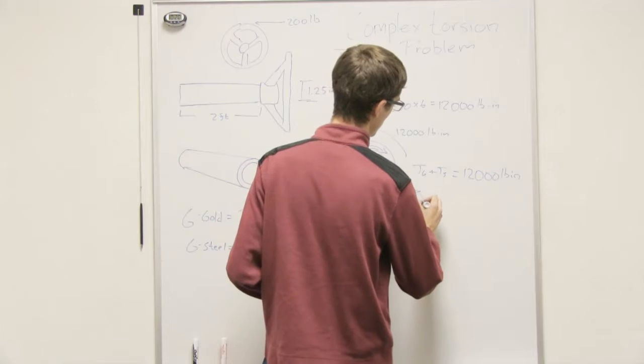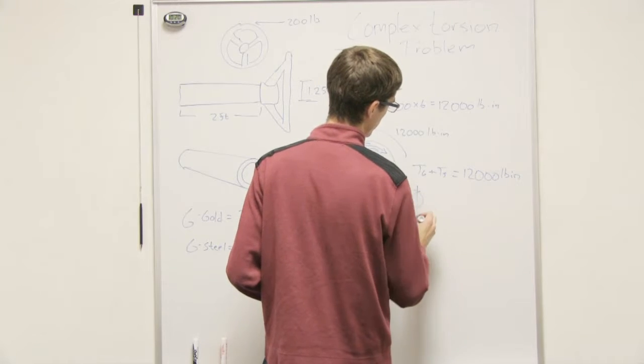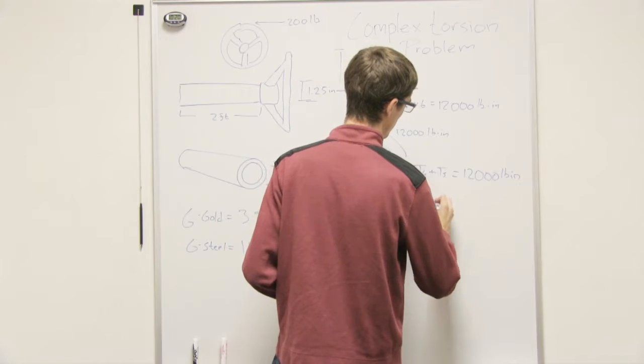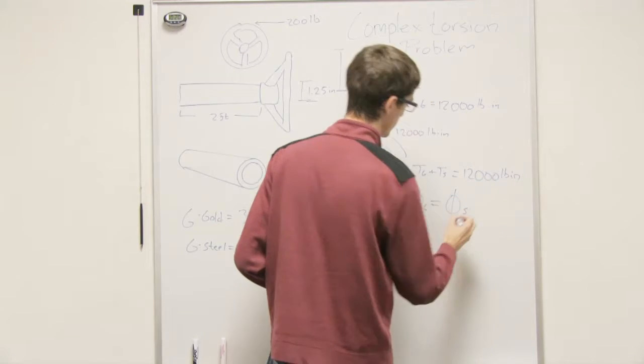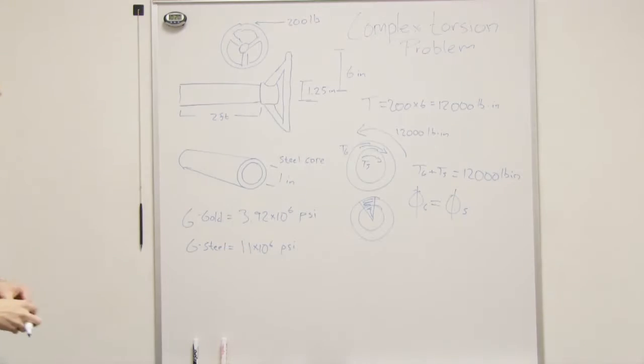And so the angle of twist, phi I think it was, of the gold is equal to the angle of twist in the steel. Those are two important things, and we can use those two concepts to solve this problem now. So let's go about doing that.